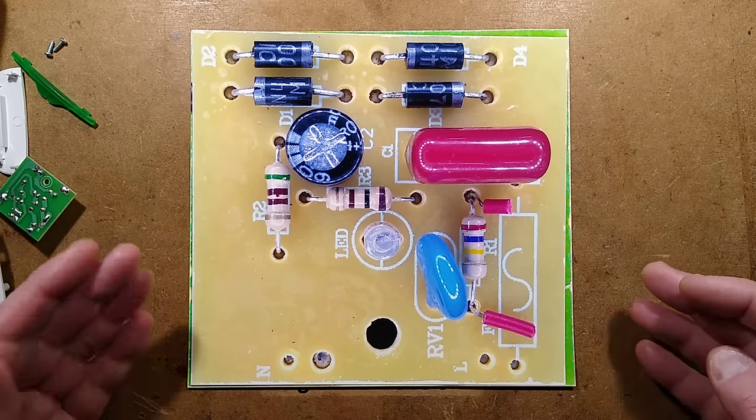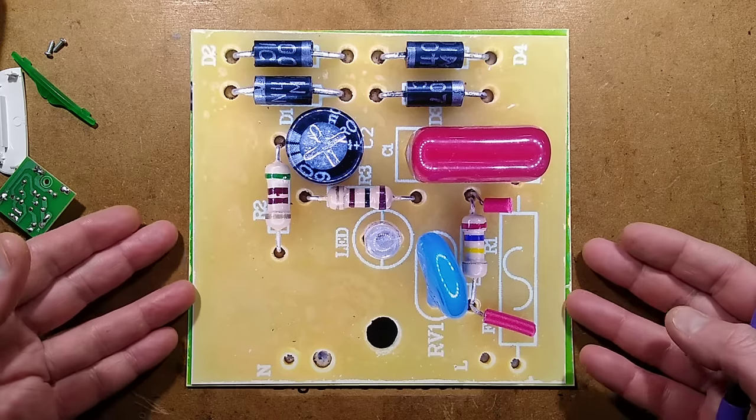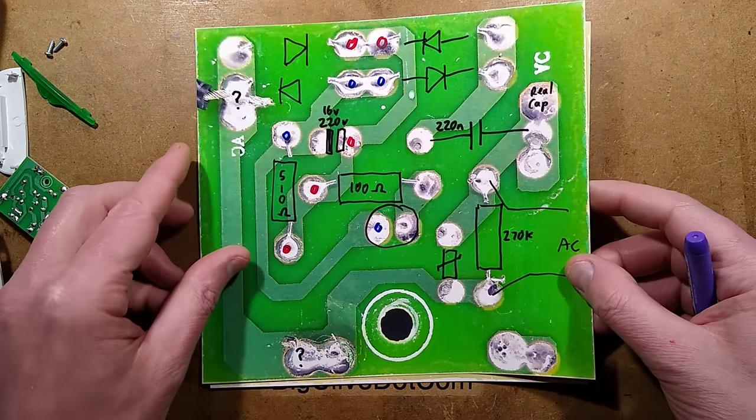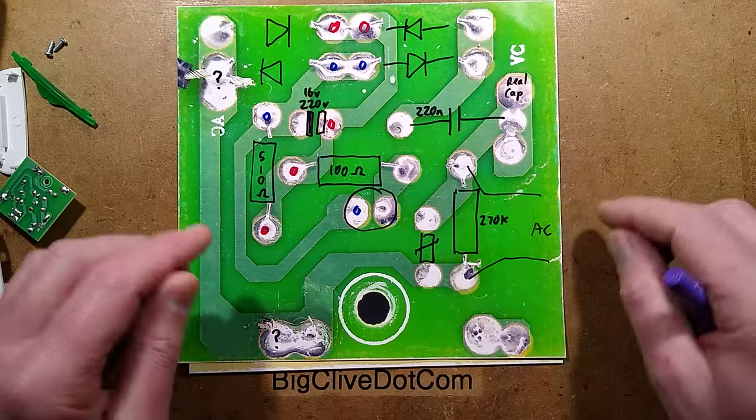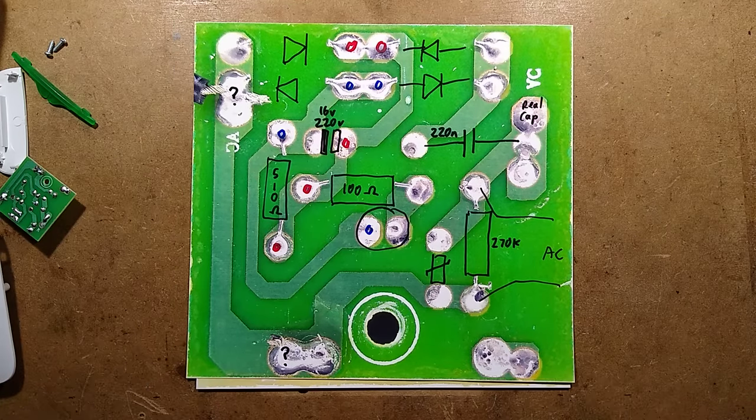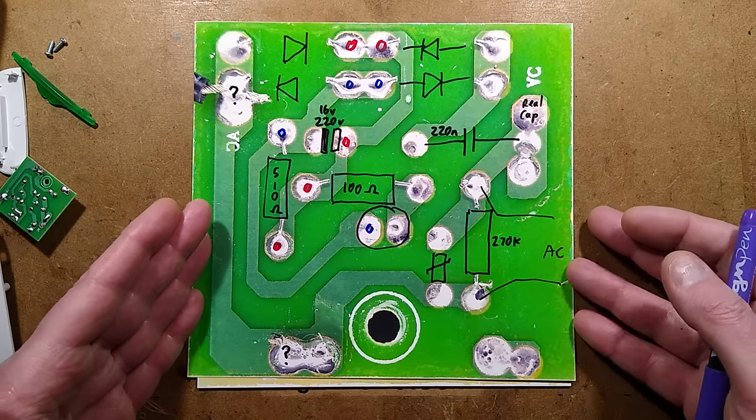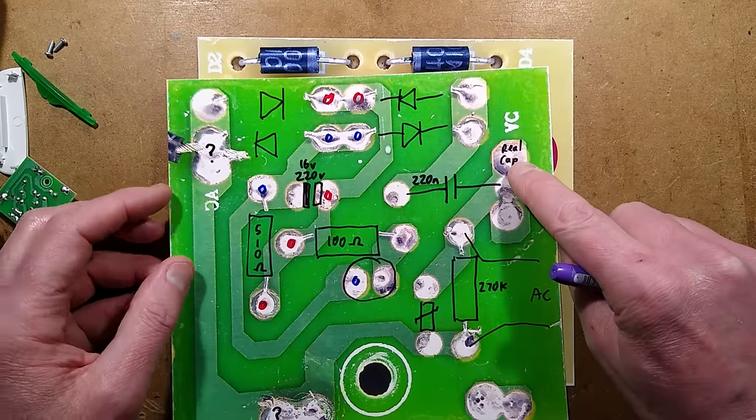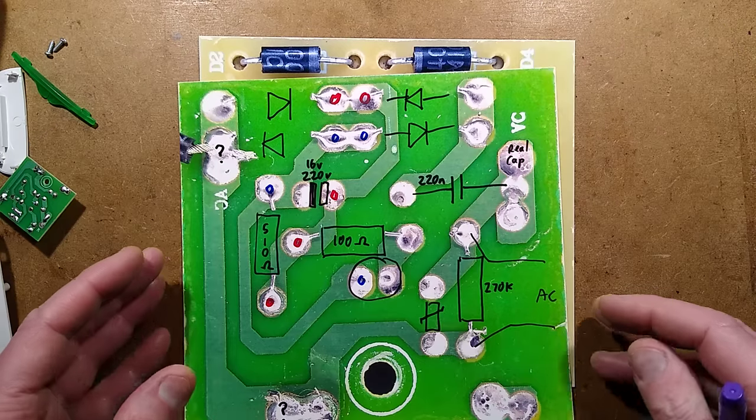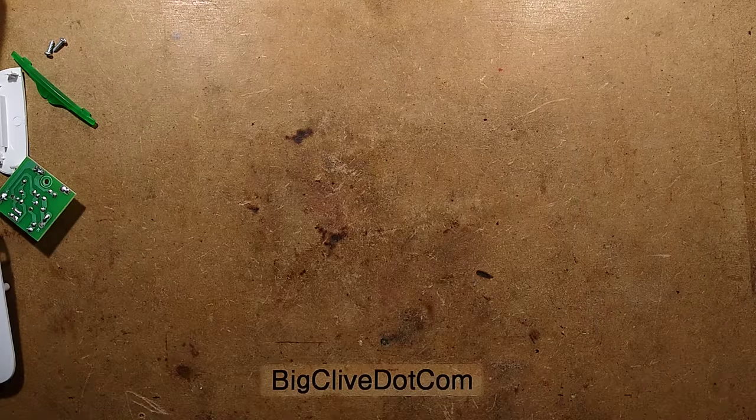The reverse engineering is done. If you want to try reverse engineering yourself, here's the top layer of the circuit board and here is the bottom layer flipped so that all the components are in the same relative position. The capacitor is 5 microfarad by the way. Here is the circuitry.